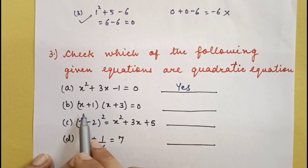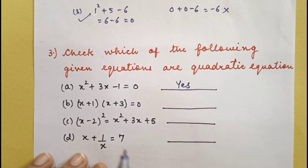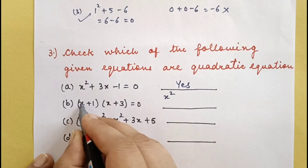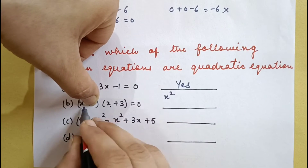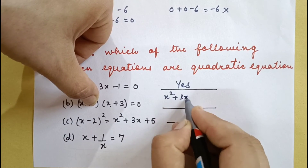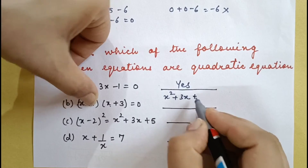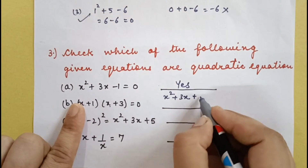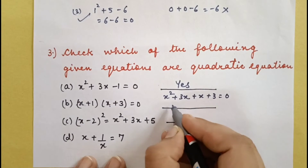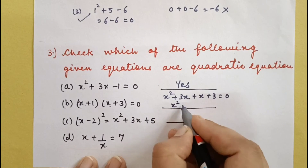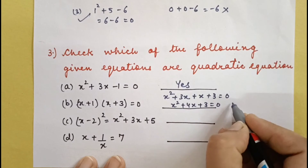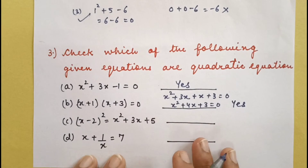Next, two linear factors are being multiplied. Let's multiply them: (x)(x) = x², plus 3x, plus 1x, plus 3×1 = 3. So we get x² + 4x + 3 = 0. This is also a quadratic equation.